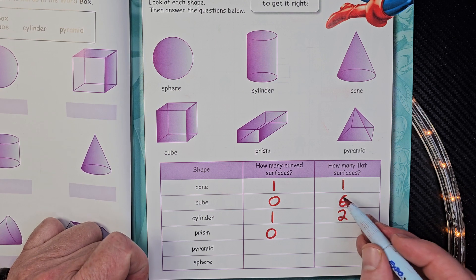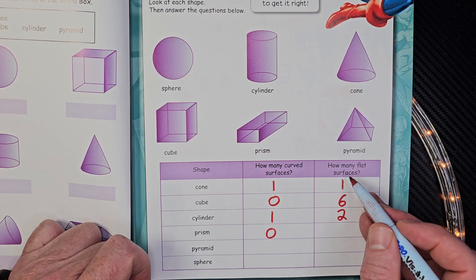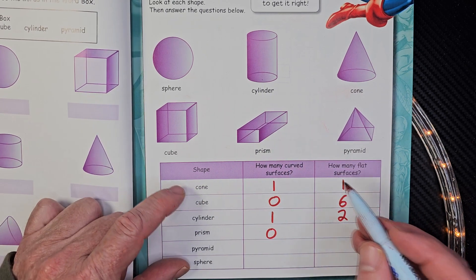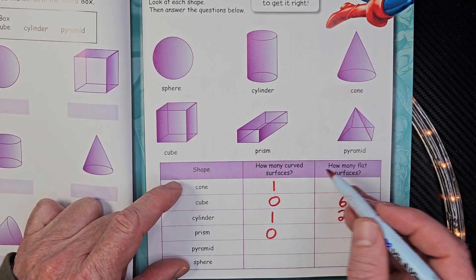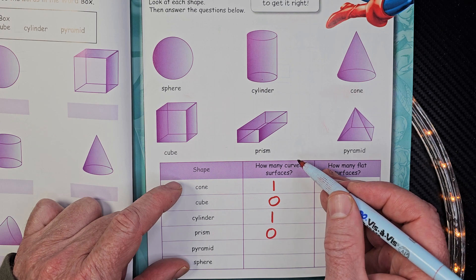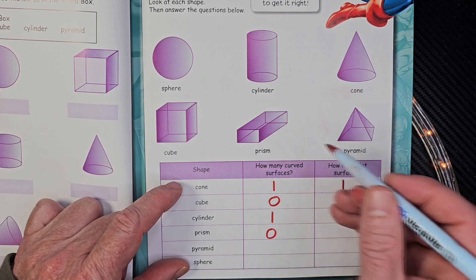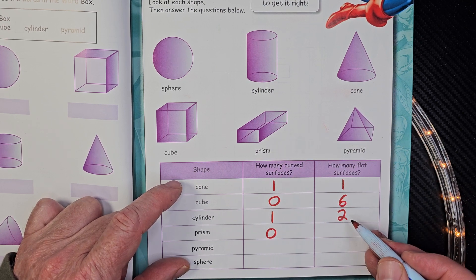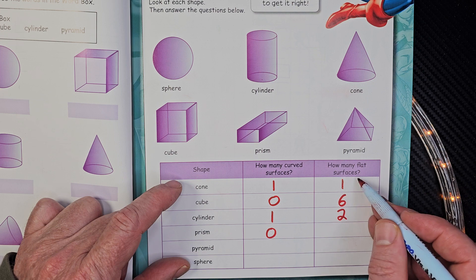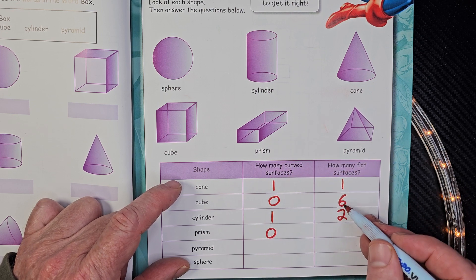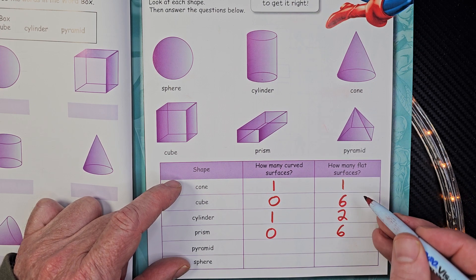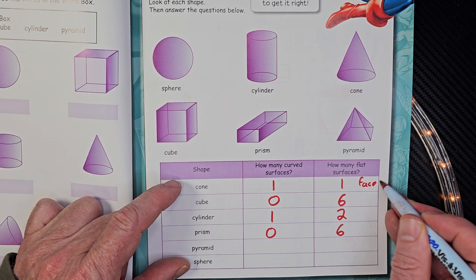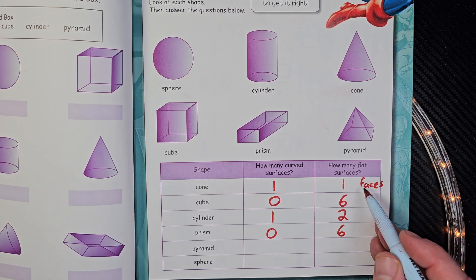Alright. Sometimes you might hear of the word faces. Like, how many faces does an object have? And when you're talking about a face, that could be either a curved face or a flat face. And usually, most of the time, they're talking about a flat face. So, right now, it says, how many flat surfaces? It's going to be the same amount as the cube. Alright. Again, if you see the word faces, F-A-C-E-S, that's kind of like the same as a surface.